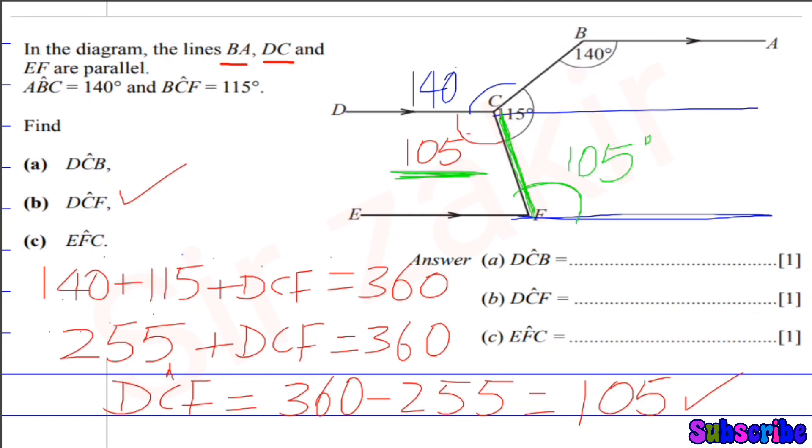Now if this angle is 105 degrees, then what is this total angle? This total angle is 180. From 180, we subtract 105 and what is left will be 75. So this angle here is 75, which will be shown with black color. This angle is 75 degrees, which is finally asked in the third part.